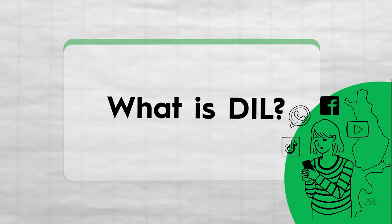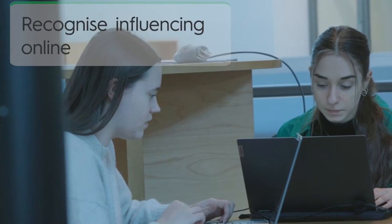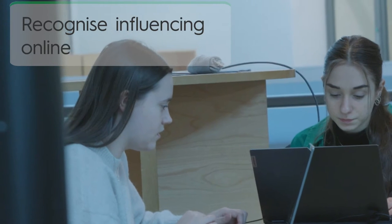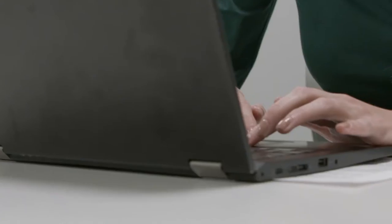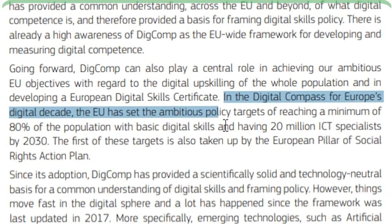DIL refers to a set of skills that enable us to understand how the digital world works more broadly. With DIL, we can recognize influencing online and act against misinformation and harmful online practices. According to a goal set by the EU, 80% of the population should have at least basic digital skills by 2030.